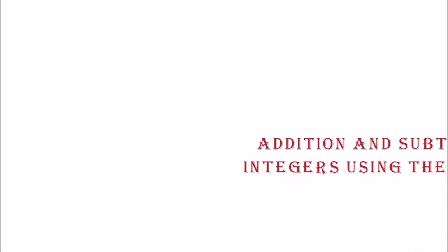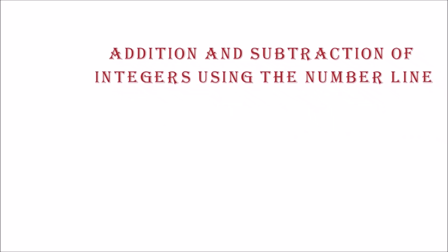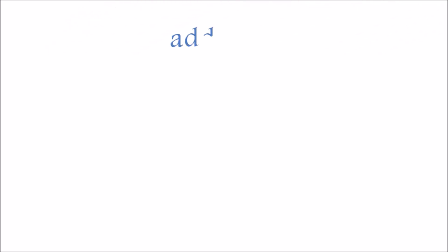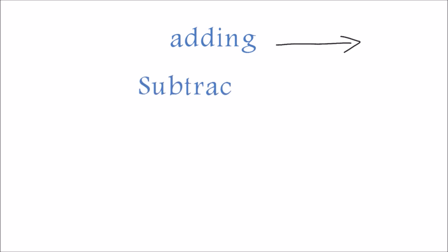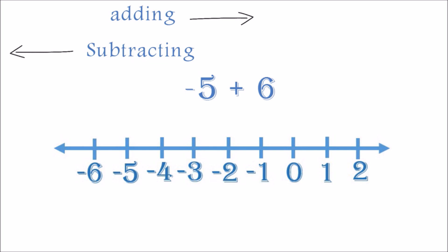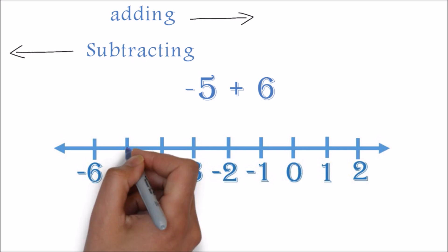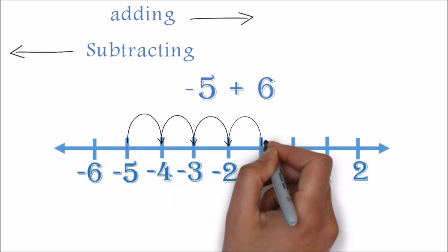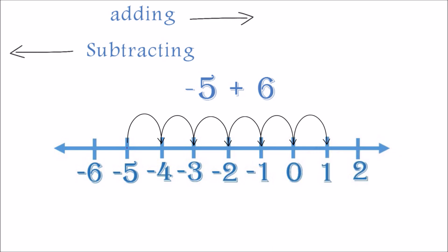Addition and subtraction of integers using the number line. Using the number line, the only thing you have to remember is that when you are adding, you move to the right, and when you are subtracting, you move to the left. Example: negative five plus six. We will start from negative five. Since it is adding, we will move six places to the right. Notice that we ended on one. Therefore, one is our answer.